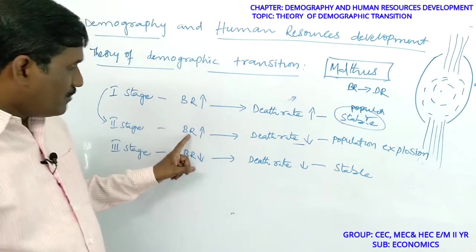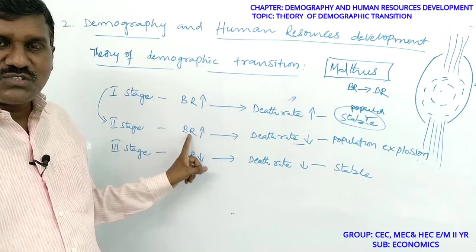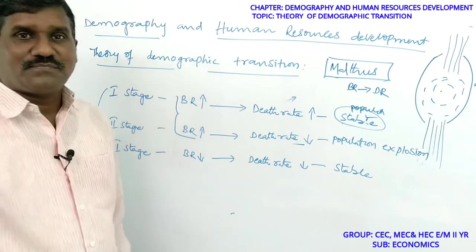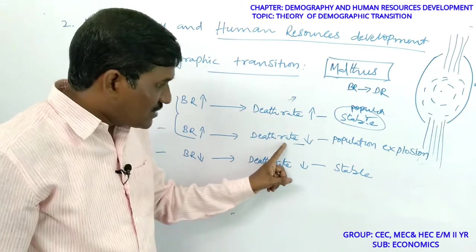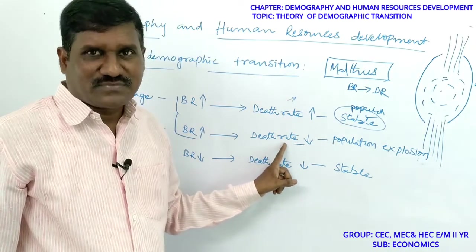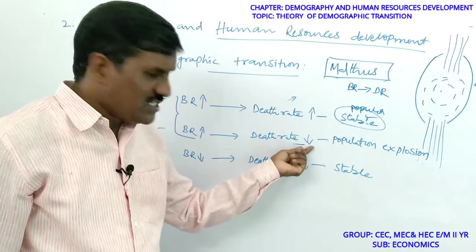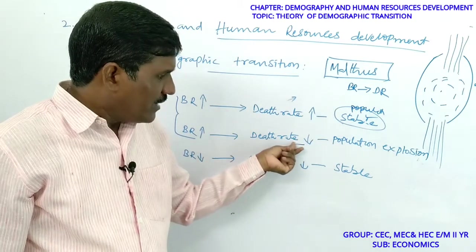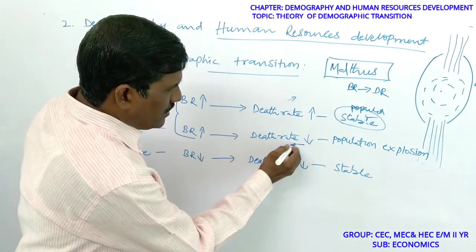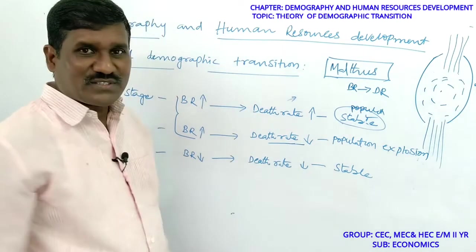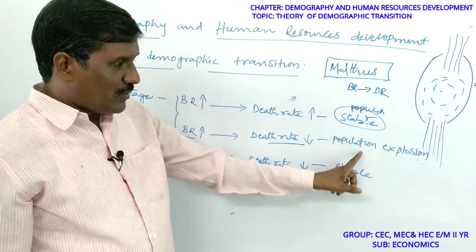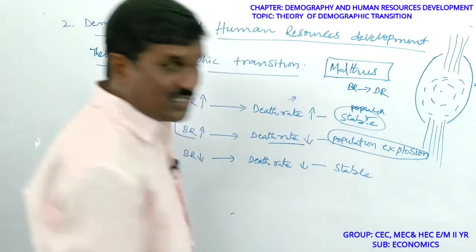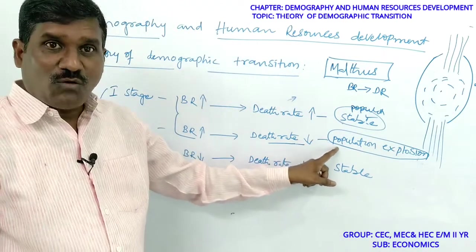But the birth rate remains the same as in the initial stage — the birth rate does not change in the second stage. However, death rate rapidly declines due to medical facilities, sanitation, and literacy. So there is a population explosion in the second stage.